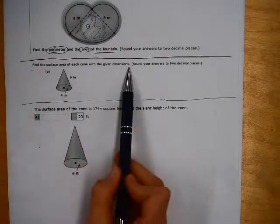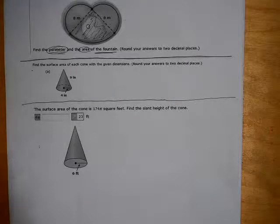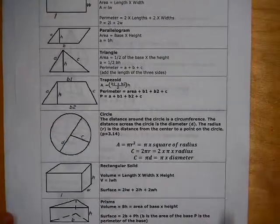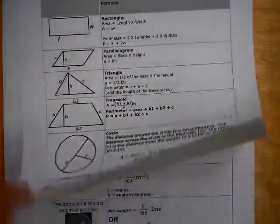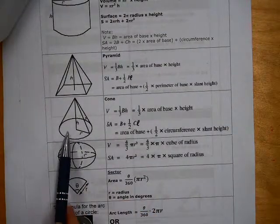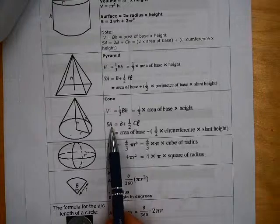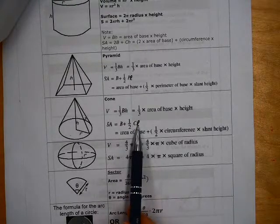And so once again, if you have not run off your formula sheet, that updated formula sheet that I gave you, then you need to do this. But I give you the formula for finding the surface area of a cone right here. Here's a cone, SA is surface area, and it says equals capital B plus one-half times C times L.